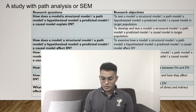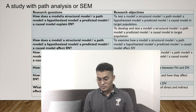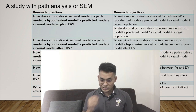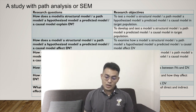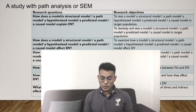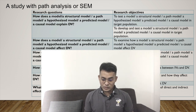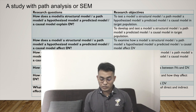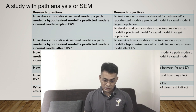For the research objective: if you want to test the model, you say 'to test a structure model, path model, hypothesized model, predictive model, or causal model' with your target population. Or if you develop the model first and then test it afterward, you say 'to develop and test a structure model, path model, predictive model, or causal model' with your target population.